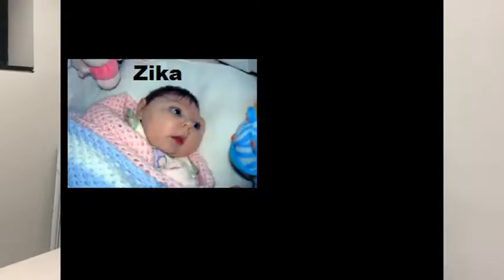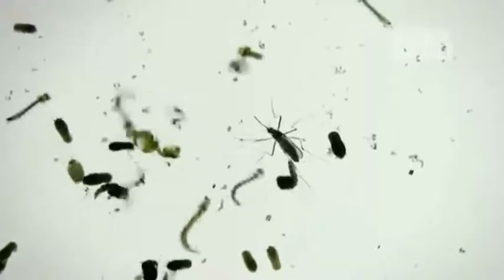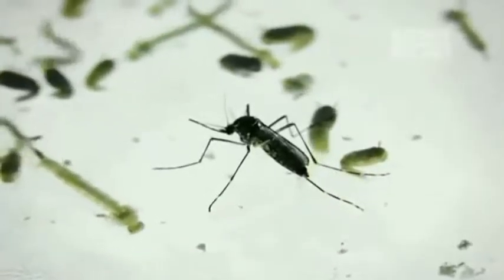Other emerging diseases to keep an eye out for in the temperate deciduous forests include diseases carried by the Aedes mosquito, including Zika, chikungunya, and dengue fever. This is of particular interest in light of climate change and increasing temperatures, as the habitat range of Aedes mosquitoes is growing and is invading the eastern United States.